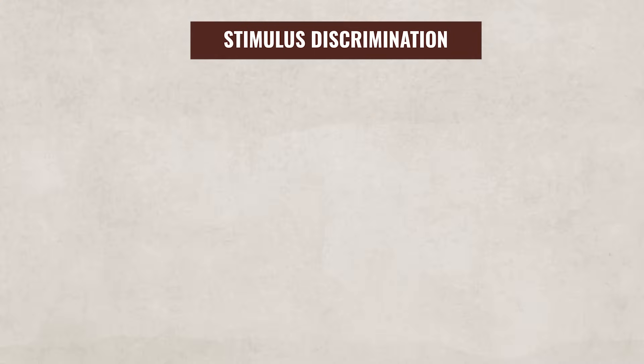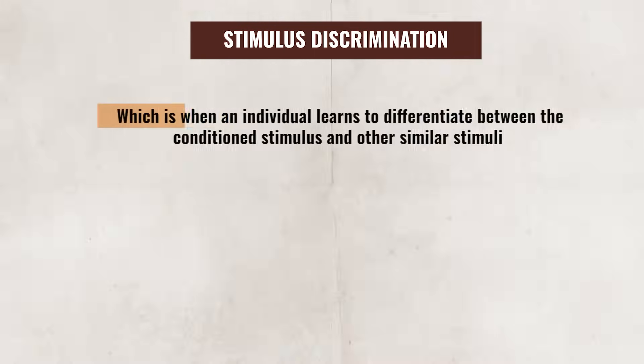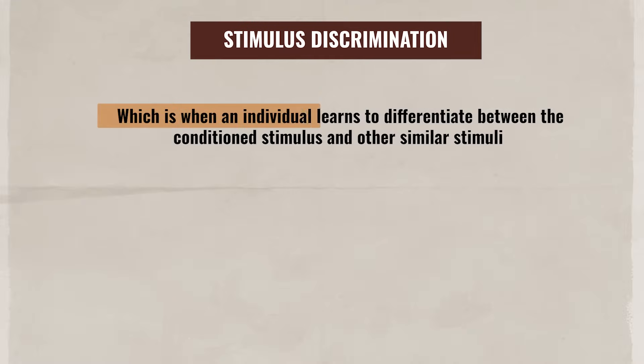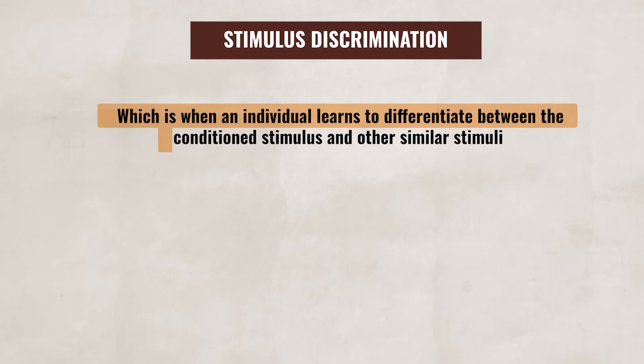Pavlov also found that the dog could be taught not to respond to similar sounding stimuli. For example, if Pavlov only gave food to the sound of a particular bell, the dog would start to not salivate to other sounds. This process is known as stimulus discrimination, which is when an individual learns to differentiate between the conditioned stimulus and other similar stimuli.